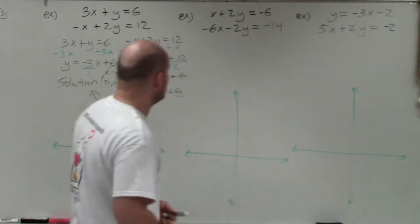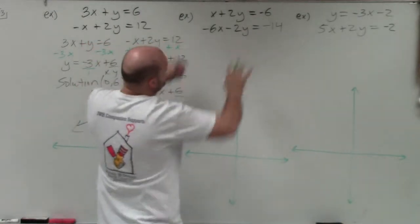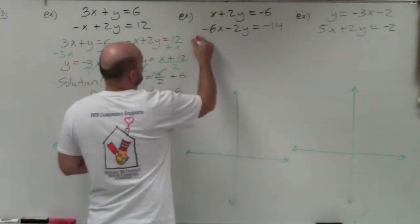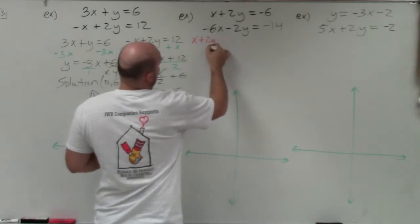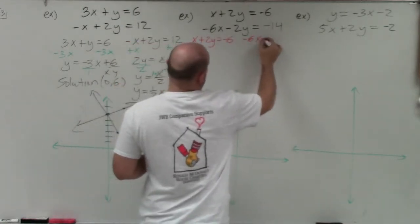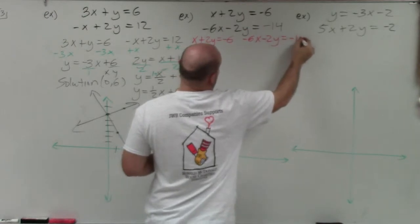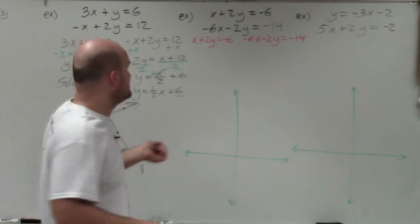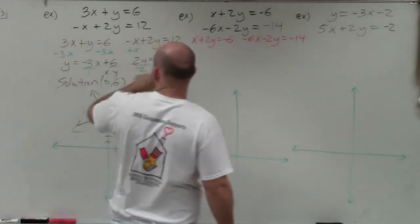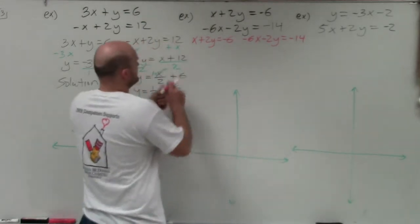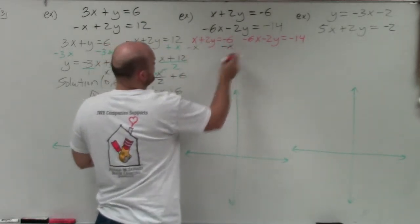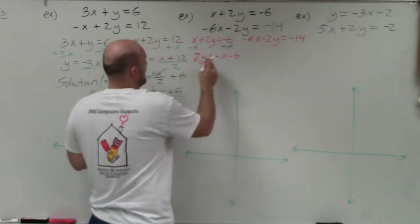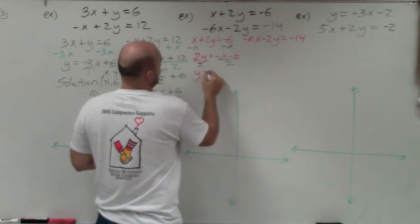Now I have another two equations, both in standard form. To graph these, I'll rewrite them in slope-intercept form. I have x plus 2y equals negative 6, and negative 6x minus 2y equals negative 14. The main thing is to solve for y. For the first equation, I subtract x from both sides, giving 2y equals negative x minus 6, then divide by 2.